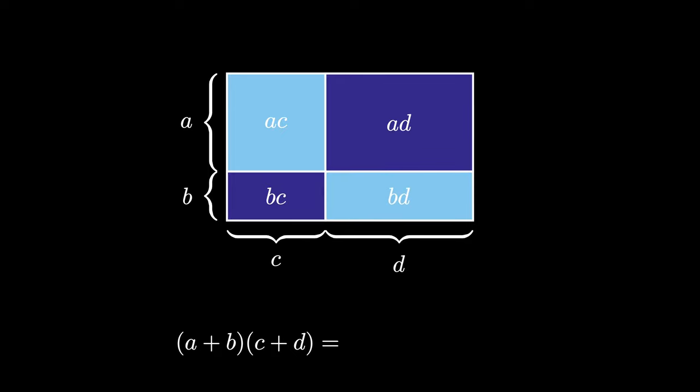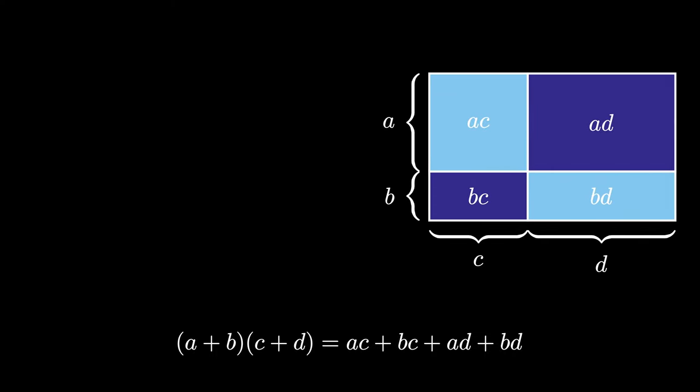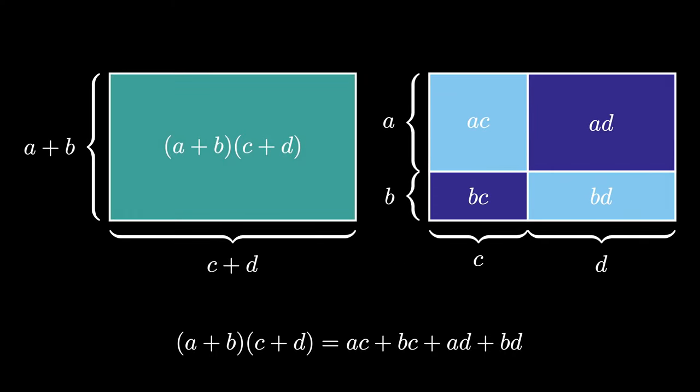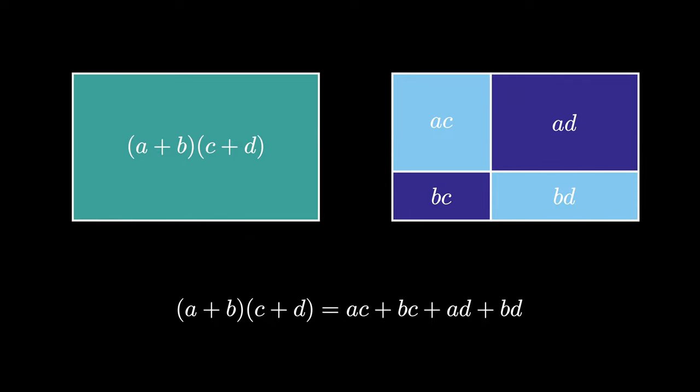Therefore, the area that we're looking for is the sum of these 4 numbers. A times C plus B times C plus A times D plus B times D. So the expression that FOIL is supposed to help us remember falls out automatically from this geometric area model.